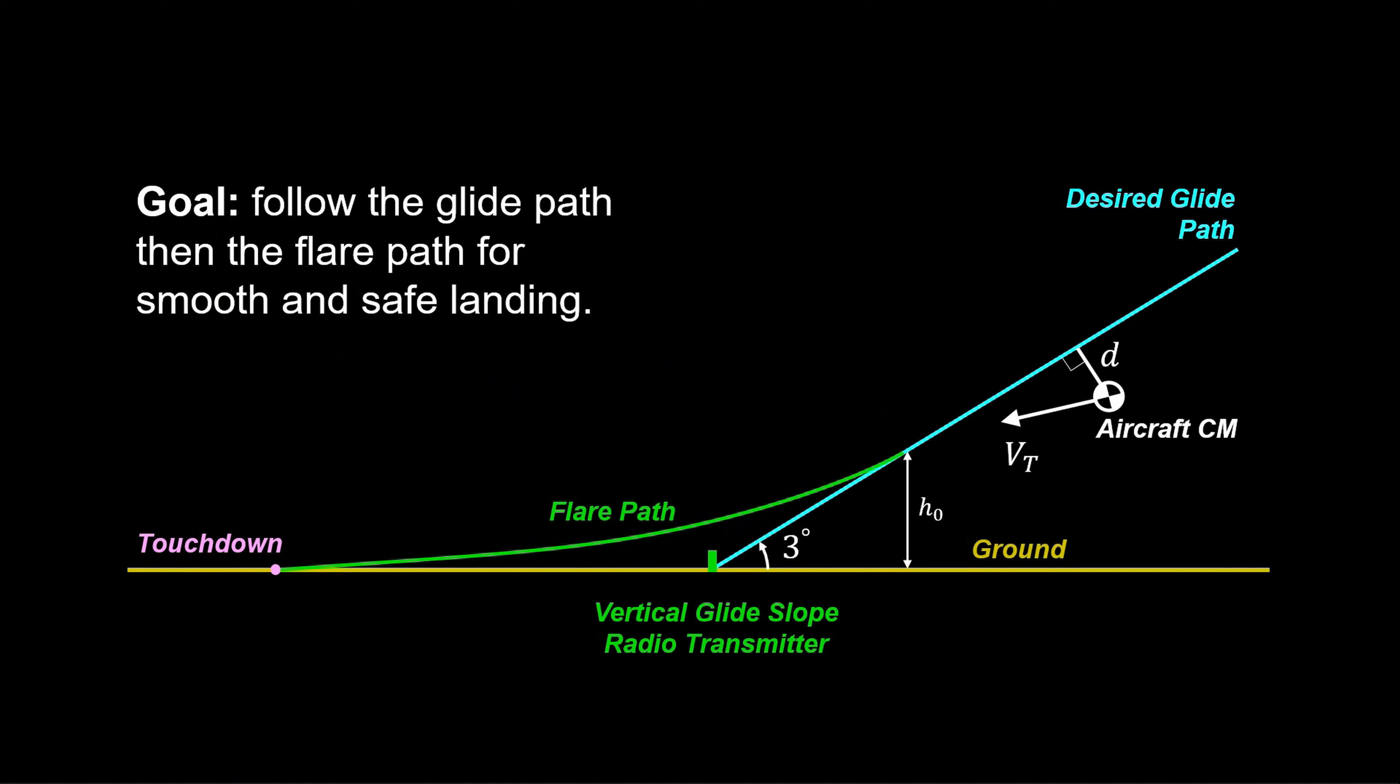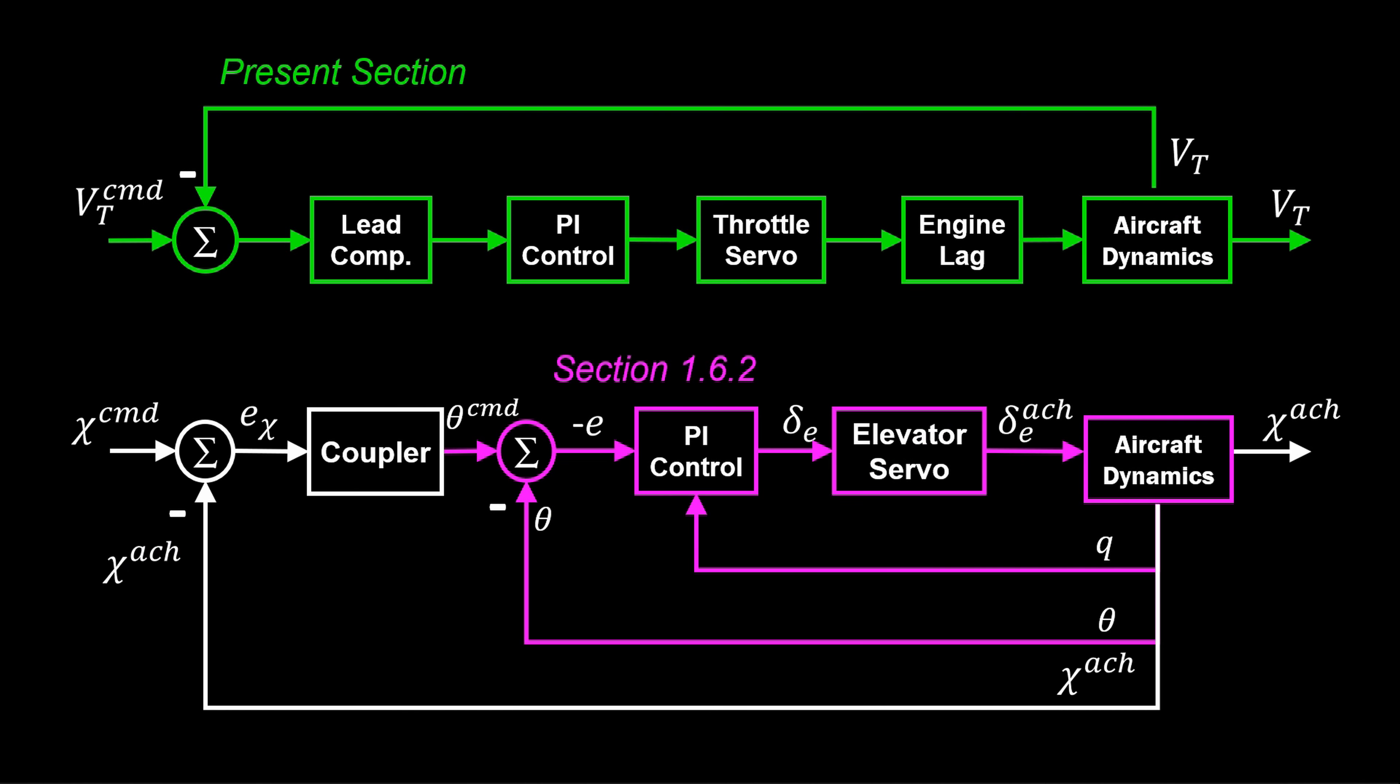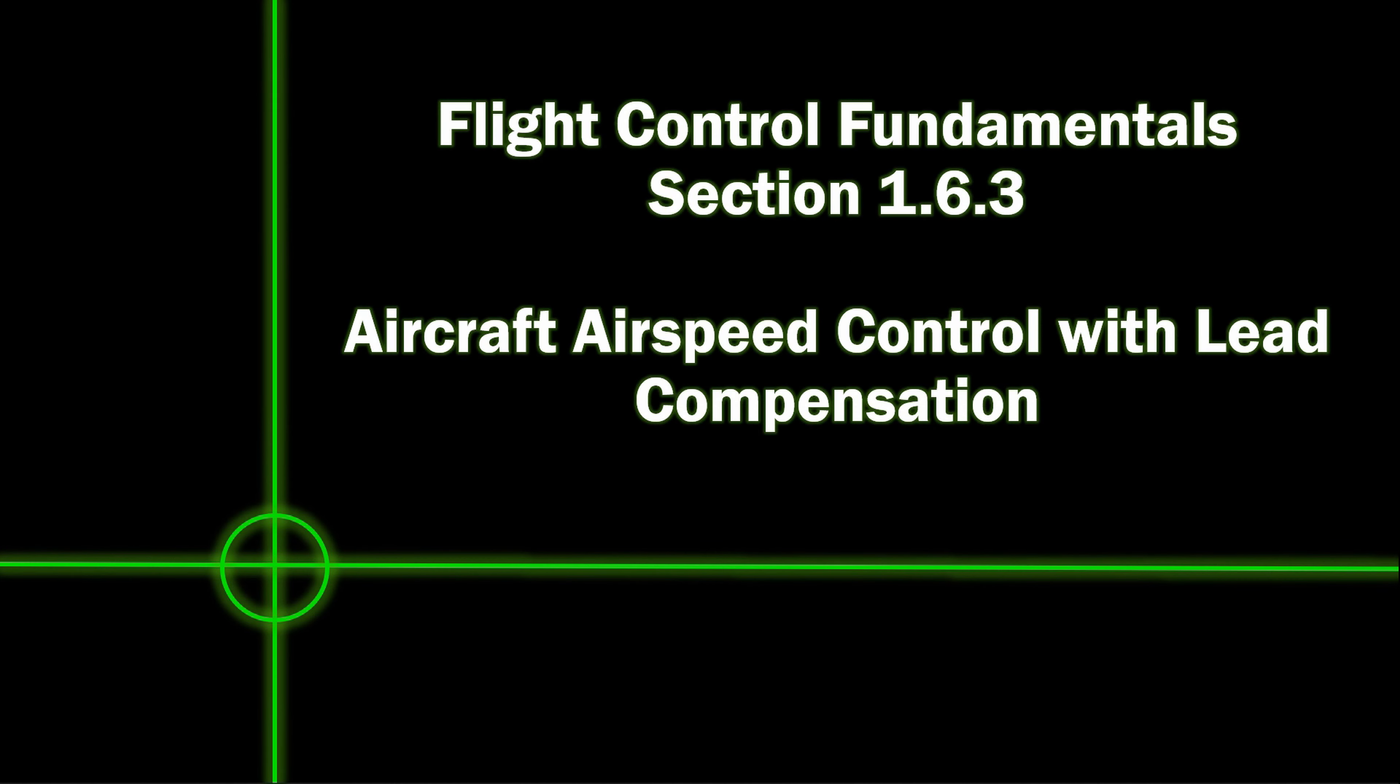In the future lesson, we will apply the lead compensated airspeed controller developed here to the automatic landing control system. So far in the landing control architecture, we've covered the two flight control systems highlighted. In the coming sections, we will cover the geometry of the glide slope guidance law and simulate the automatic landing system in the nonlinear simulation.